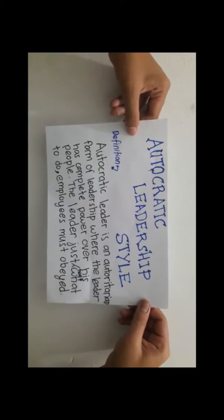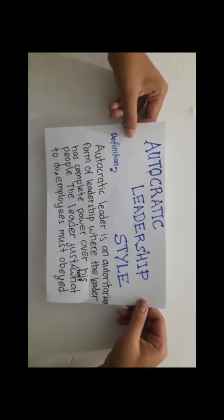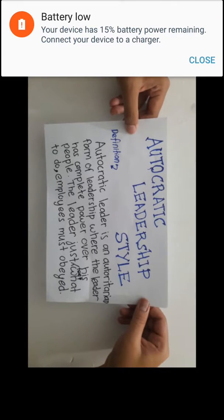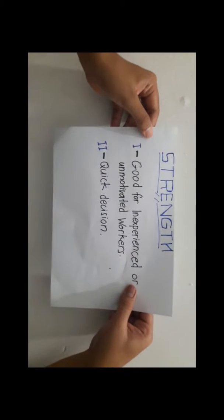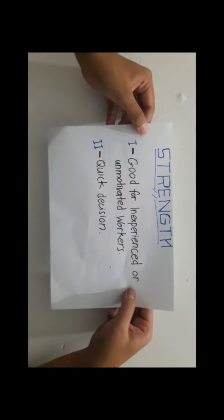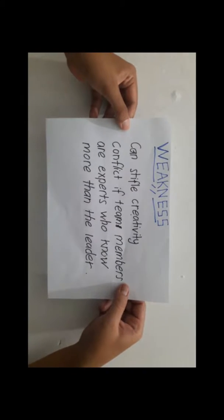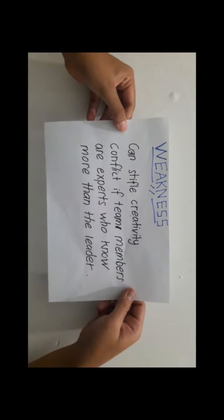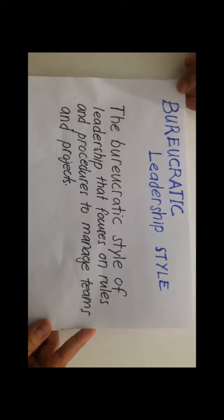First, autocratic leadership style. Autocratic leadership is an authoritarian form of leadership where the leader has complete power over his people. The leader just tells what to do; employees must obey. For the strength, it is good for inexperienced or unmotivated workers and allows for quick decisions. For the weakness, it can stifle creativity, especially if team members are experts who know more than the leader.